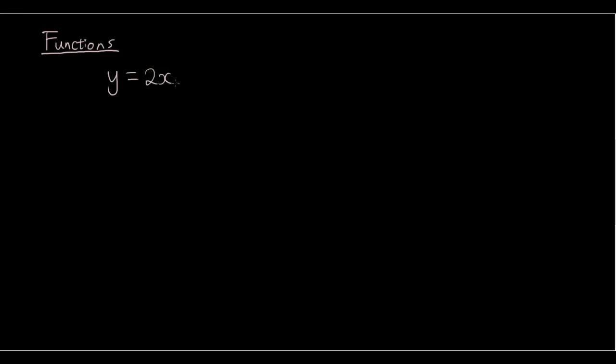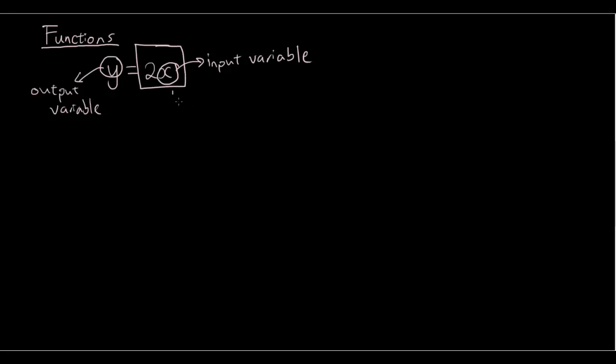Now basically, x you can think of as the input variable. Because we decide what x is. But we have already said that y is equal to 2x. So y is the output variable.